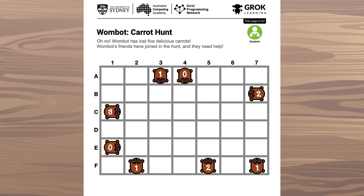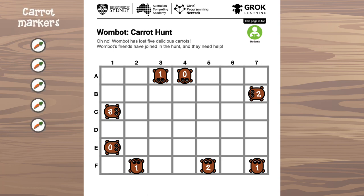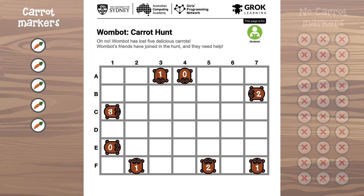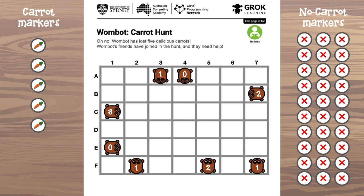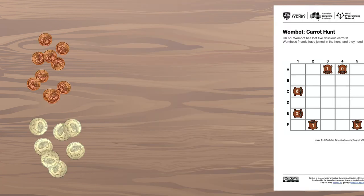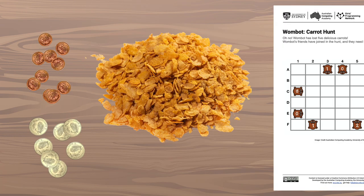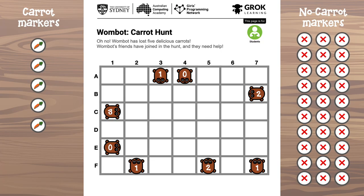By putting together all of the information from the different Wombots, you can figure out where the lost carrots are. You've got some carrot markers to place on the grid where you think they are, and a pile of no-carrot markers to fill in the other spots on the grid. And if you don't want to cut out all of those markers, you could use coins or cornflakes or something else you've got lying around.